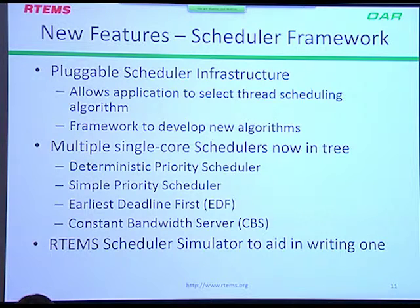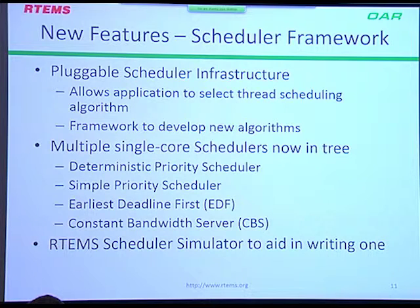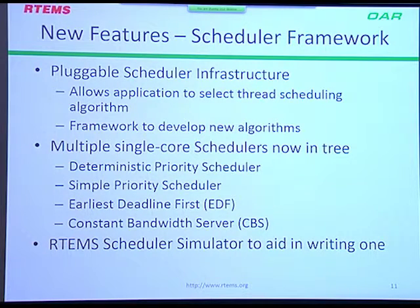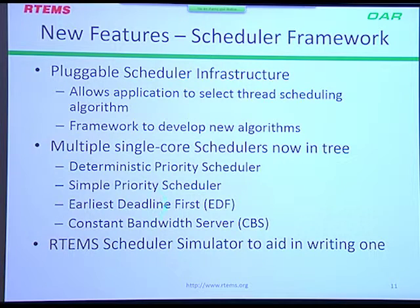One new feature I'm really proud of is that as preparation for symmetric multi-processing we added a pluggable scheduler framework — you can replace the thread scheduling algorithm in RTEMS or write your own. We have the deterministic priority scheduler, which is the one RTEMS has always had running in constant time; a simple priority scheduler which is low memory; a classic earliest deadline first scheduler; and now a constant bandwidth server scheduler with a quality of service library, which can allow you to say that certain threads won't make their period. These are uniprocessor schedulers with room to add more.